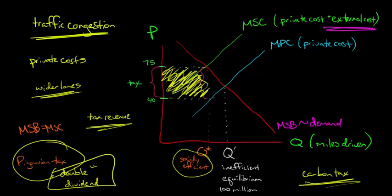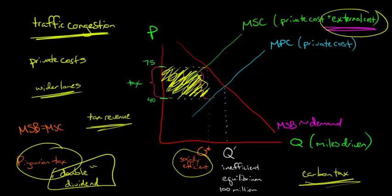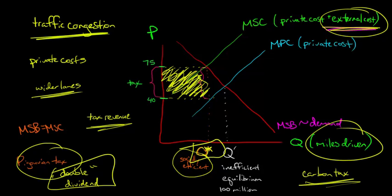Sometimes people say Pigouvian taxes are nice, but to know the Pigouvian tax you need to know the marginal external cost, and if we don't know that, how can we really set the tax? Others say that if we know the external cost, we also know the socially efficient quantity, so why not just set the quantity directly — the total amount of miles driven or carbon emissions we'll allow? That basically leads into the idea of marketable permits, otherwise known as cap and trade, which we'll discuss in the videos to come.